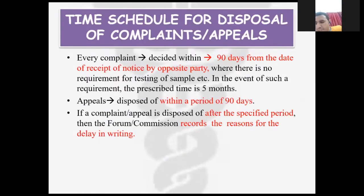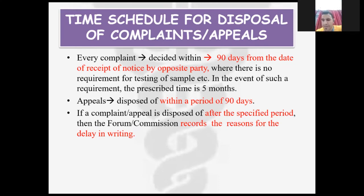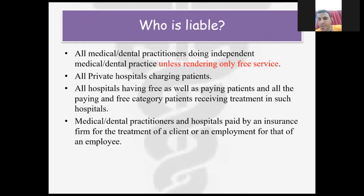Regarding time schedule for disposal of complaints and appeals: every complaint must be decided within 90 days from the date of receipt of notice by the opposite party, where there is no requirement for testing of a sample. In cases requiring sample testing, the prescribed time is five months. Appeals are disposed of within a period of 90 days. If a complaint or appeal is disposed after the specified period, the commission records the reason for the delay in writing.